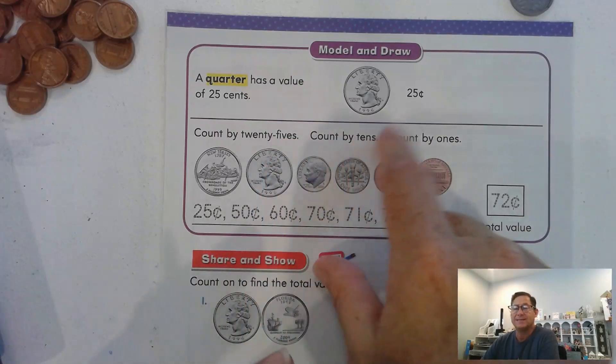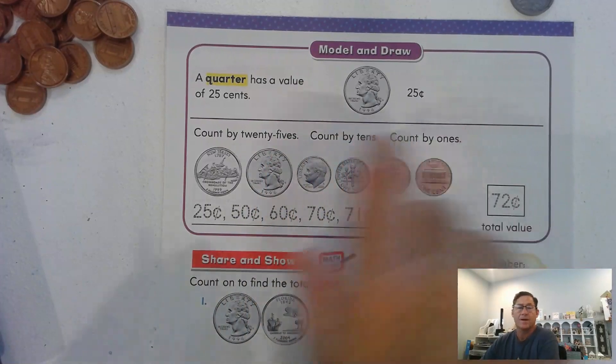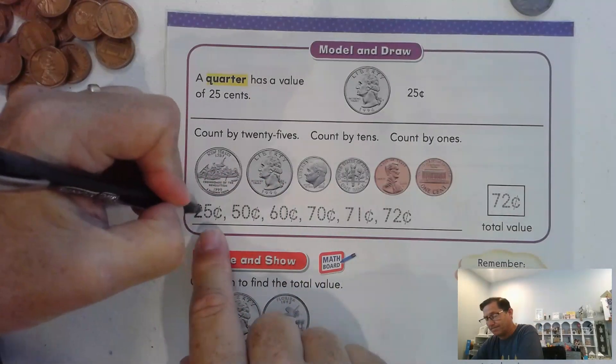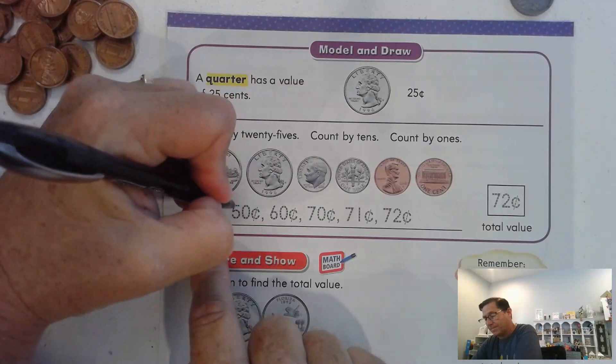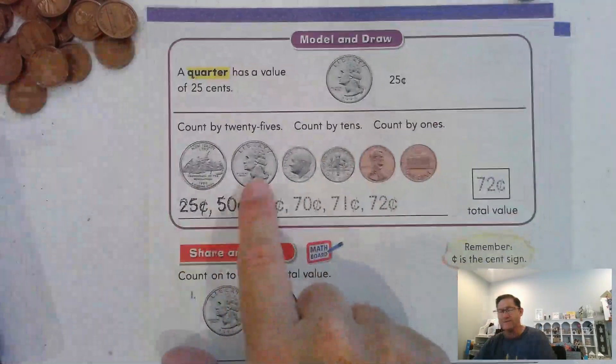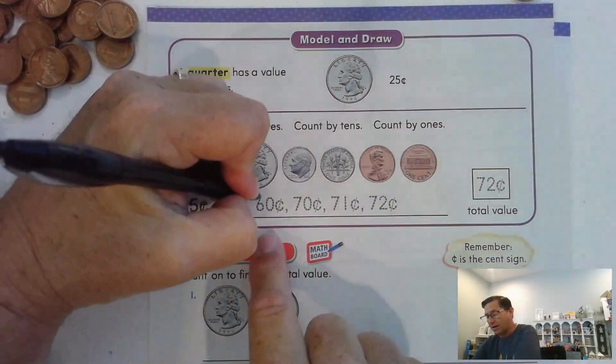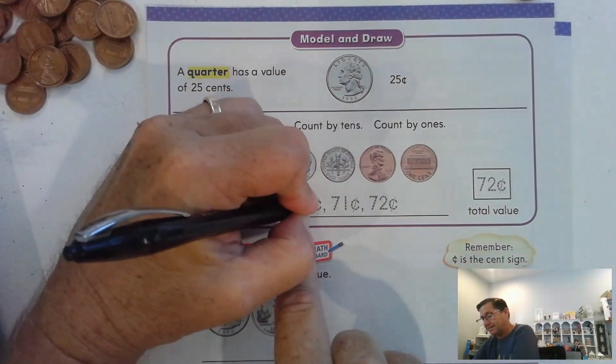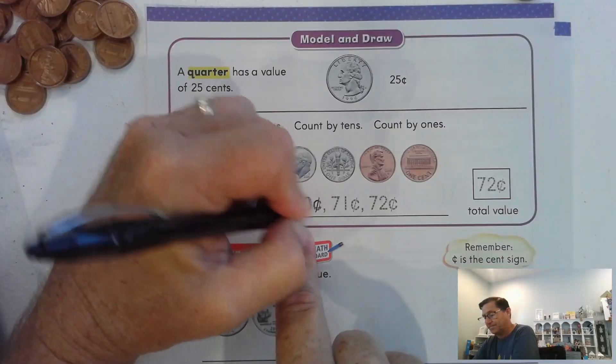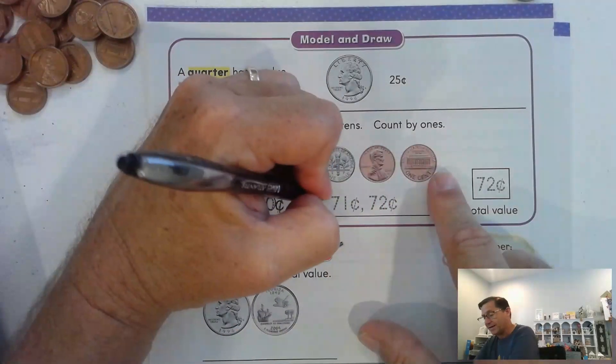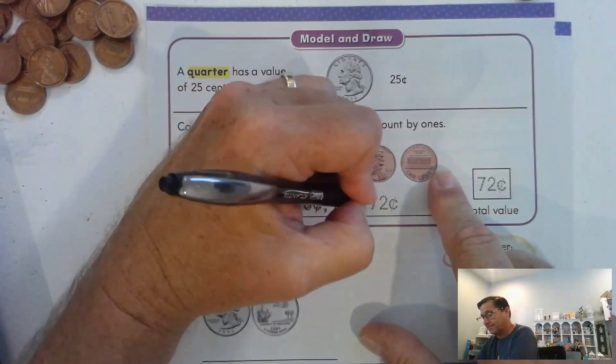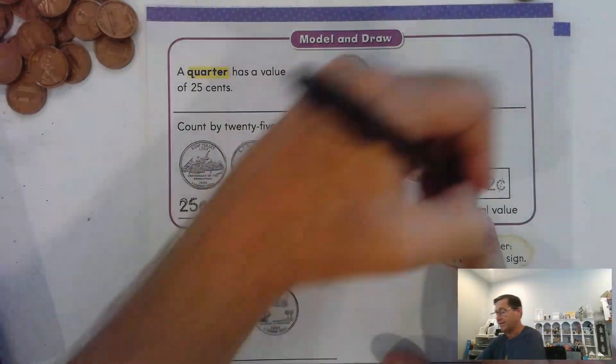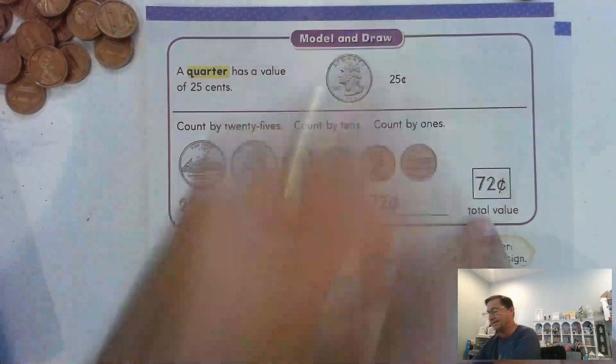Count by 25s, then count by 10s, then count by 1s. We have two quarters here, so 25, then 50. Two quarters is worth 50 cents. Count on by 10: 50 plus 10 is 60, 60 plus 10 is 70. Now count on by the last two pennies: 71, 72. So 72 cents in this collection.